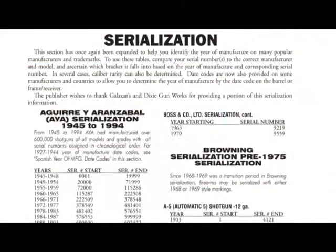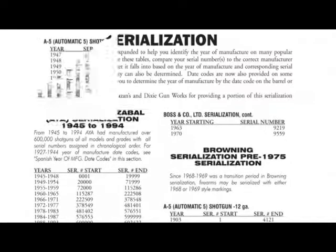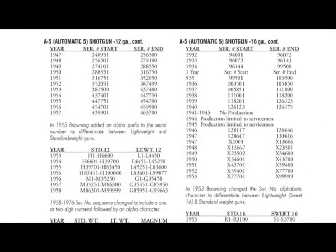We have compiled several firearm serialization charts that are useful in dating your firearm. Serialization charts are located in the back of the Blue Book of Gun Values and are listed alphabetically by manufacturer.